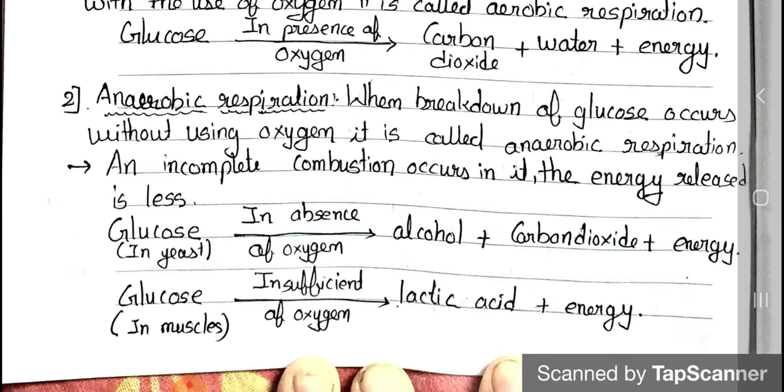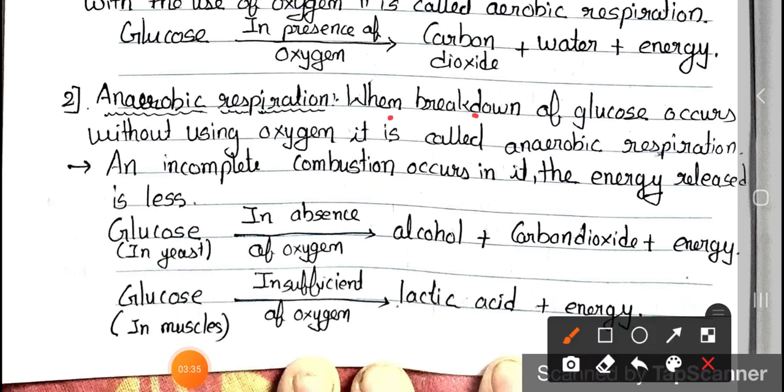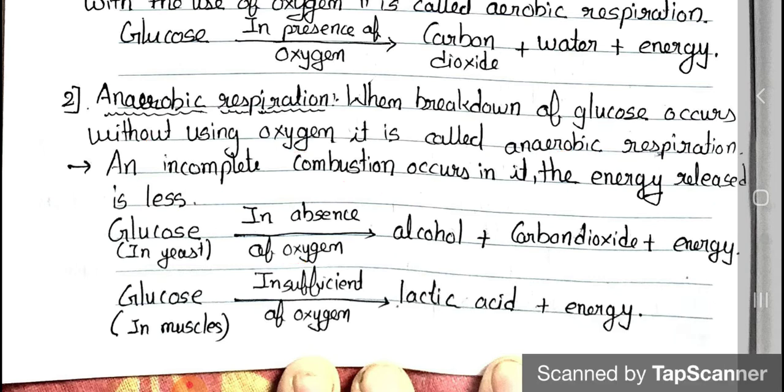And second one: anaerobic respiration. When breakdown of glucose occurs without using oxygen, it is called anaerobic respiration. And incomplete combustion occurs in it. The energy released is less. Glucose in yeast, in absence of oxygen, gives alcohol, carbon dioxide and energy. And glucose in muscle, in insufficient oxygen, gives lactic acid and energy.